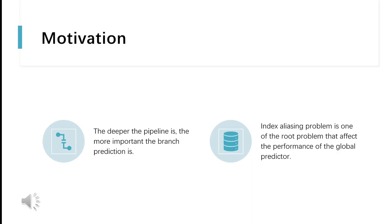Branch prediction is very important to the performance of a deeply pipelined processor. Branch prediction enables the processor to begin executing instructions long before the branch outcome is certain. Recent work about branch prediction shows that the index aliasing problem is one of the root problems that affect the performance of the global predictor.